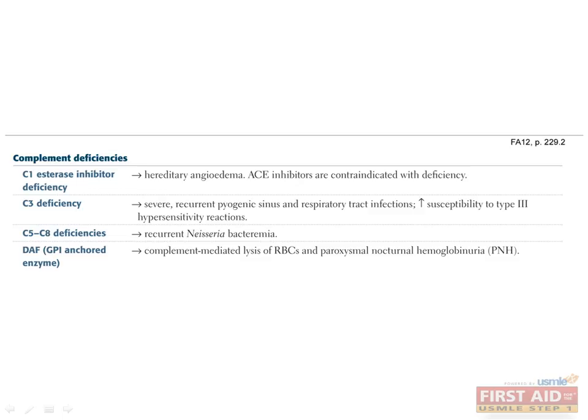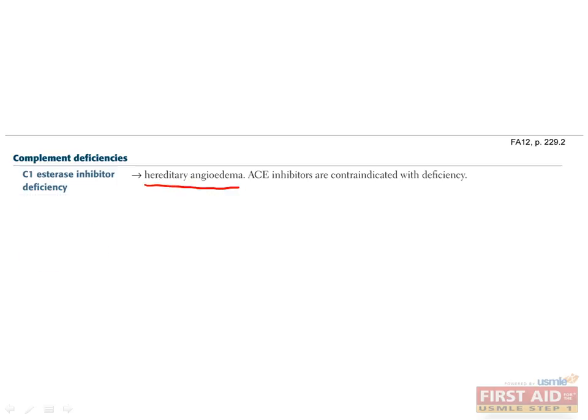Deficiencies of various aspects of the complement cascade are fairly high yield topics, so you might want to commit them to memory. Hereditary angioedema, classically manifested by impressive and even life-threatening swelling of the face and airways, is the result of deficiency in C1-esterase inhibitor. C1-esterase inhibitor prevents complement activation against self-cells. Decay accelerating factor, or DAF, is another regulatory component in the complement cascade, the deficiency of which results in lysis of red blood cells and manifests as paroxysmal nocturnal hemoglobinuria.